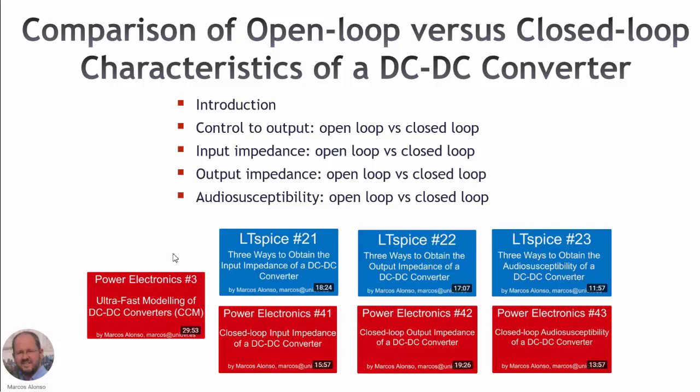Hello everyone, welcome to this presentation entitled 'Comparison of Open Loop versus Closed Loop Characteristics of a DC-DC Converter.' In this presentation we will see first the introduction, and then we will talk about the different characteristics of a DC-DC converter, comparing them between open loop and closed loop operation. We will see how the closed loop operation affects the control-to-output transfer function, the input impedance, the output impedance, and the audio susceptibility transfer function.